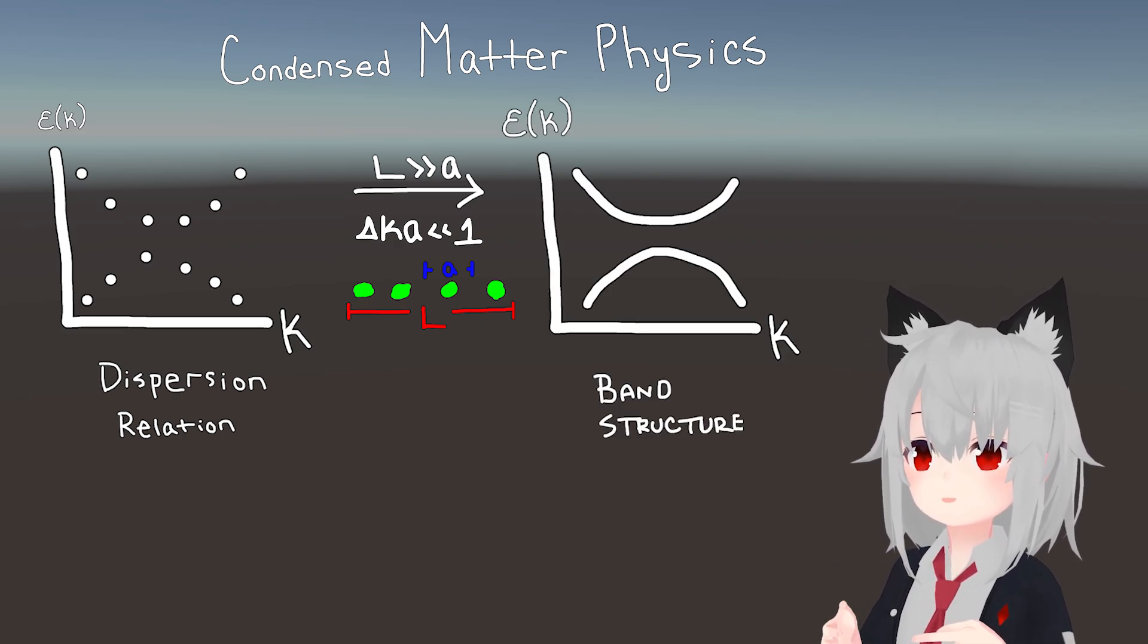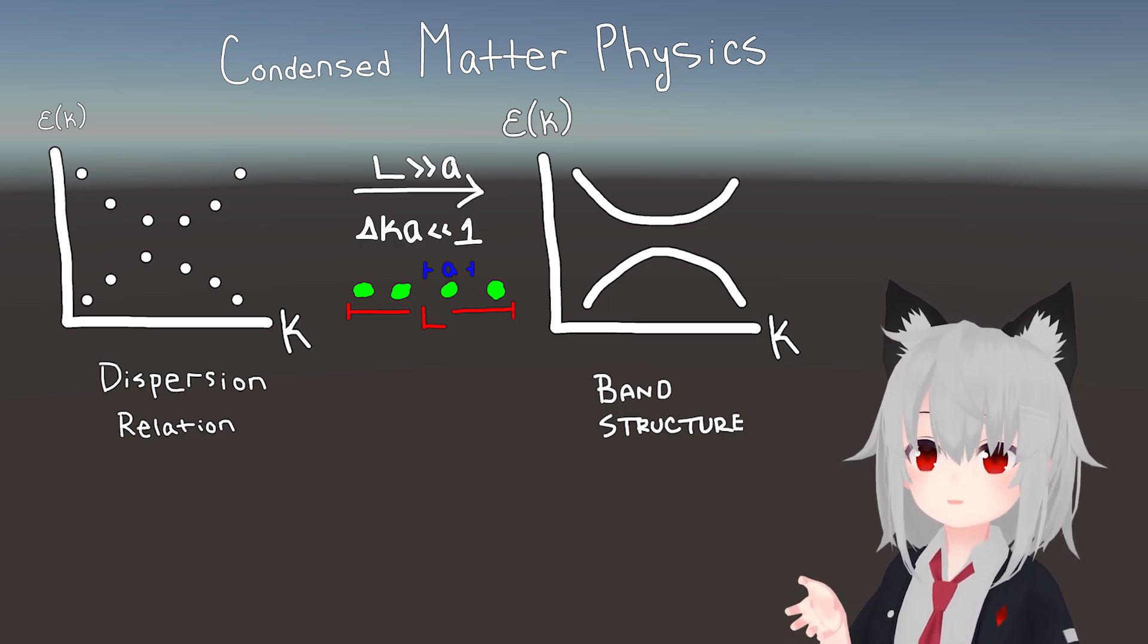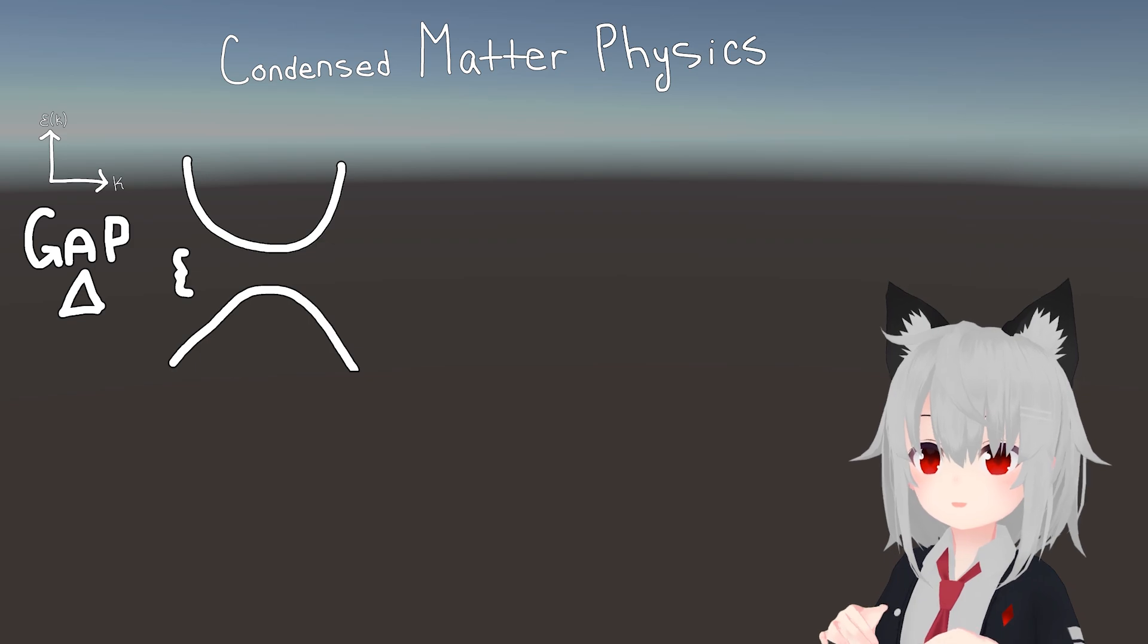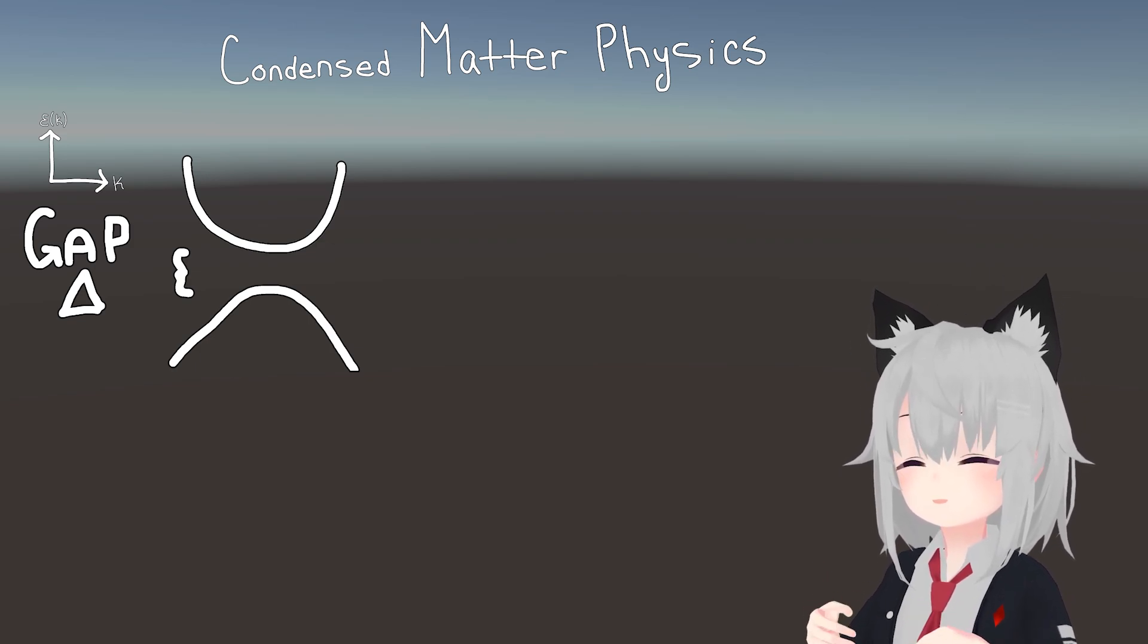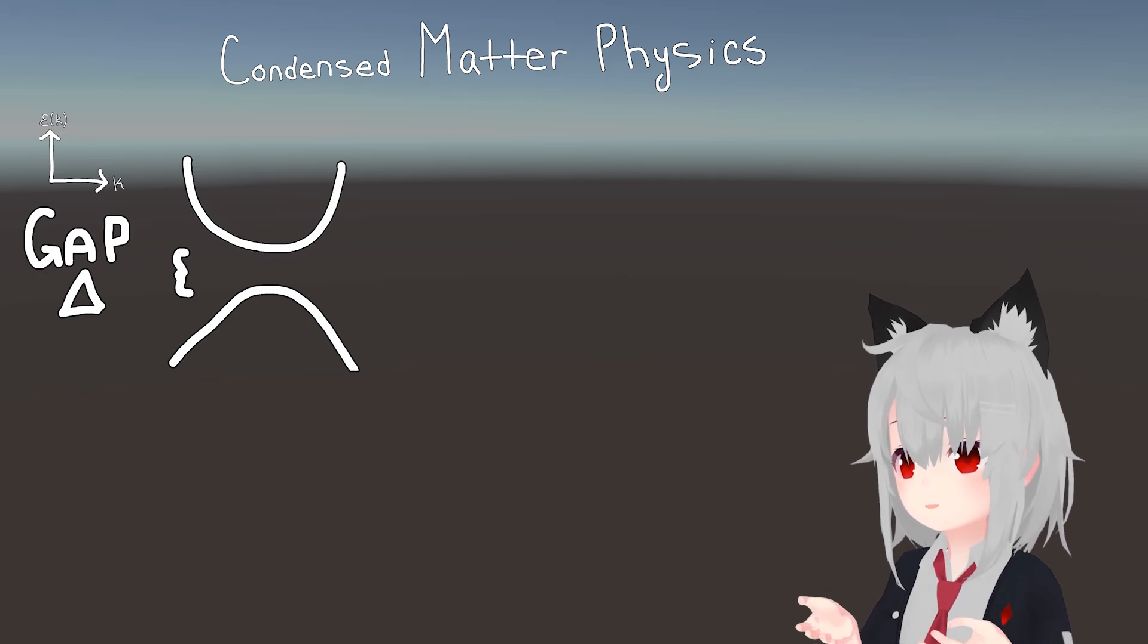This band structure is basically a visual representation of what the allowed quantum states are as a function of momentum. Now, this band structure may or may not have a gap at some point, but if it does, then this turns out to have important ramifications on the transfer properties of the material.